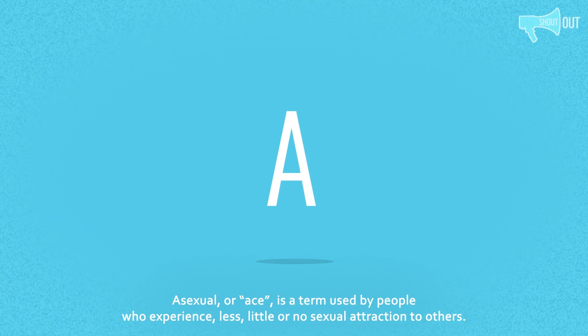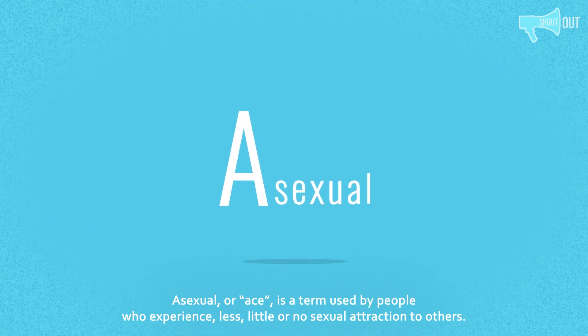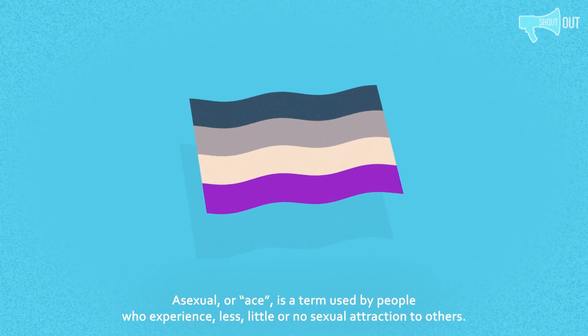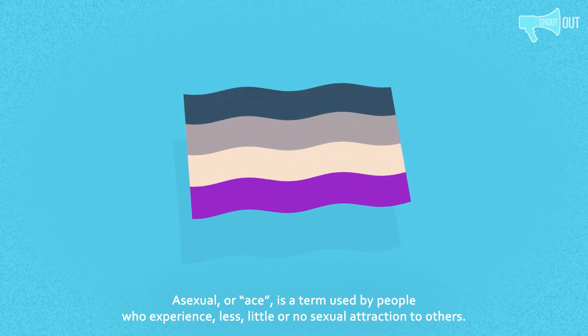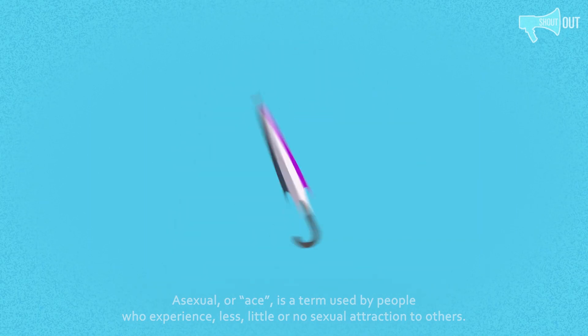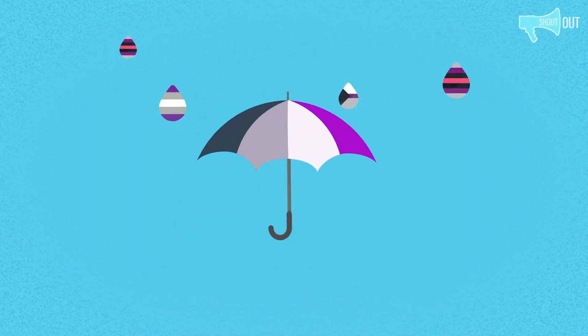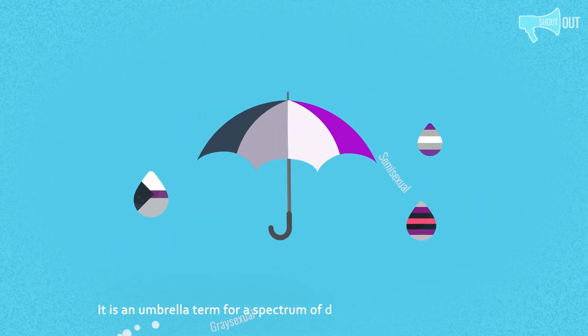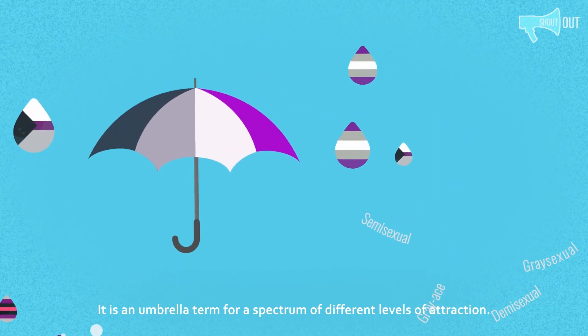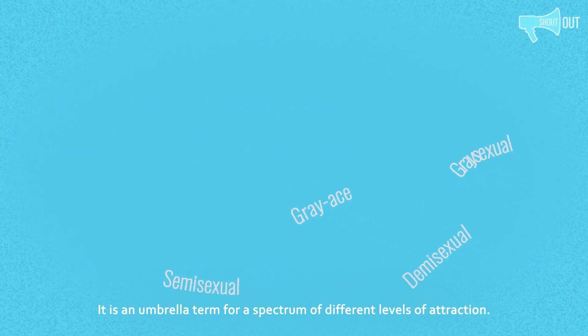Asexual, or ace, is a term used by people who experience less, little, or no sexual attraction to others. It is an umbrella term for a spectrum of different levels of attraction.